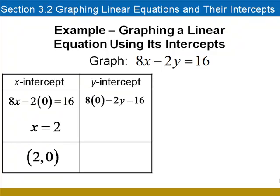For the y-intercept, we'll put in 0 for x. We have the equation negative 2y equals 16. Divide both sides by negative 2 to see that the y-intercept is at negative 8. 0 comma negative 8.